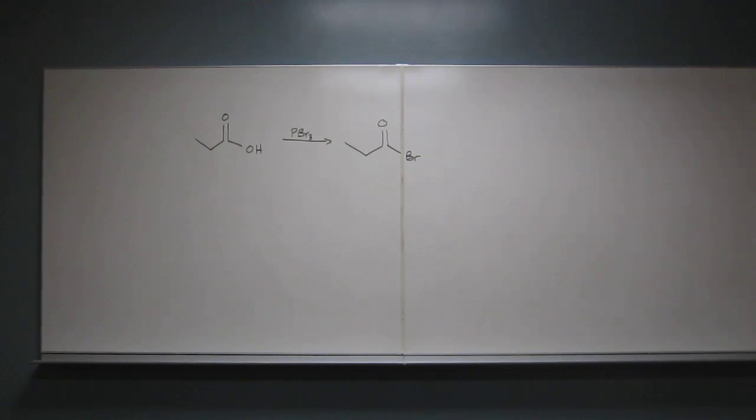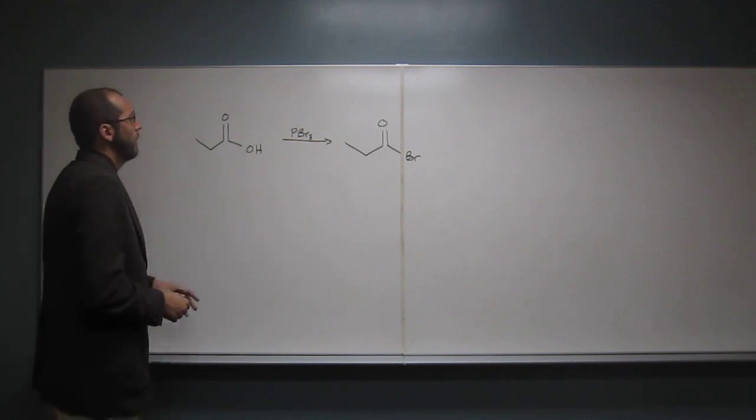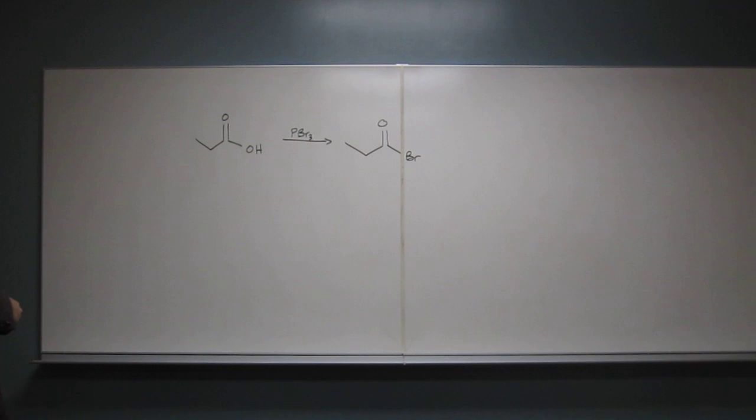Let's go ahead and do this second mechanism that was on the quiz. This one said draw the mechanism from propanoic acid to propanoyl bromide using phosphorus tribromide.